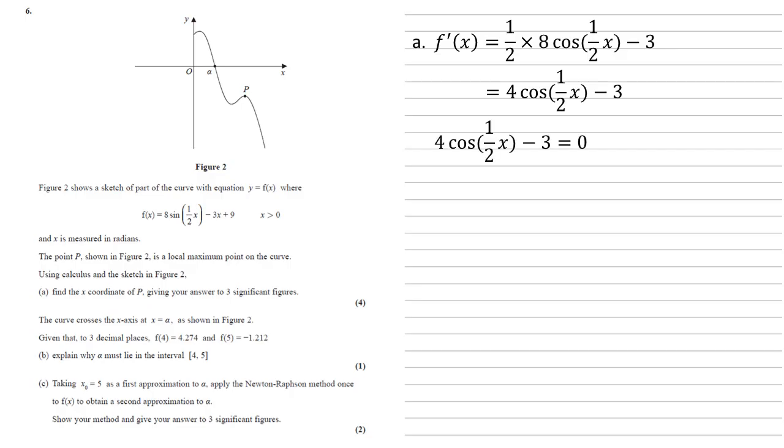We're now going to set this equal to 0 and solve it for x. So 4 cos half x minus 3 equals 0, cos half x must equal 3 quarters. Using the calculator to do the inverse cos of 3 quarters, we get that half x is equal to 0.7227.